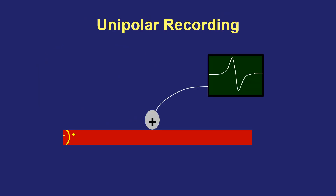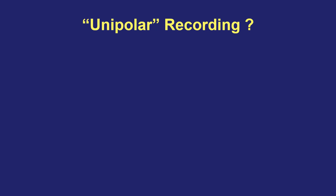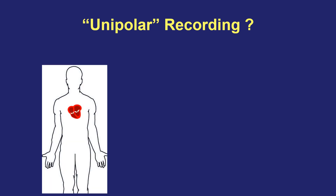Let's start by discussing unipolar recordings in the heart. You might be asking yourself: we just discussed having an anode and a cathode in the recording circuit, so what do we mean by unipolar recording where there's only one electrode? When we say unipolar recording in the heart, we're talking about having only one electrode in the heart itself — usually an anode — and the cathode is somewhere remote, not located in the heart.